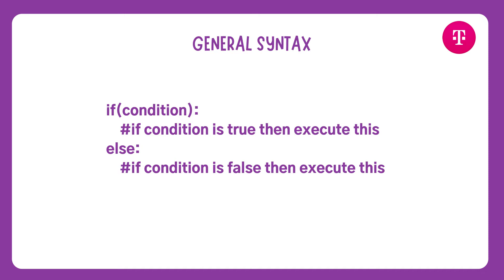One thing you might have noticed is that unlike C++, Java, or C, we are not using curly braces here. In Python we don't use curly braces to group code — we use indentations. With indentations we declare which pieces of code belong under which block. Inside the if statement we give indentation, and the code that falls under it stays within the same indented area. This is how we segregate the code.